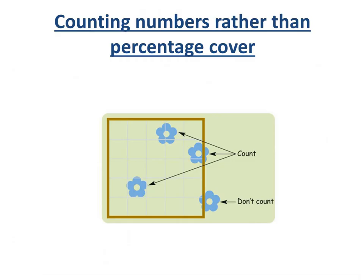We've done percentage cover today. But you could also be given a question that asks you to count — just literally count the number in a certain area. Anything that is more than half outside the quadrat, you wouldn't count. There are 3 plants in a 25-square grid, so you'd times it by 4 to find how many there are per 100 squares — 3 times 4 equals 12.